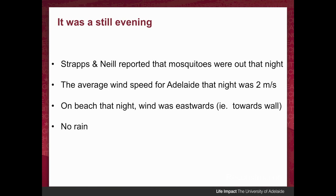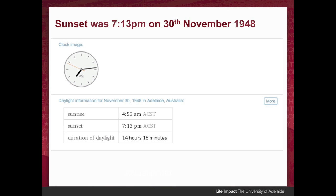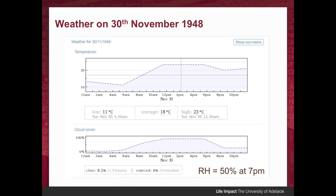It was a still evening at the time. Straps and Neal reported that there were mosquitoes out and only a gentle breeze at most. Sunset was around the time the man was first seen by Lyons. Straps and Neal reported that as they left at about 8 o'clock it was about the time the street lights came on, so it was around 8 that it started to get really dark. The weather at the time would have been around 22 degrees centigrade and the humidity was around 50% at 7 o'clock — a nice warm evening, but not overly hot.